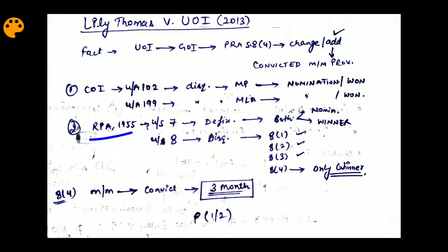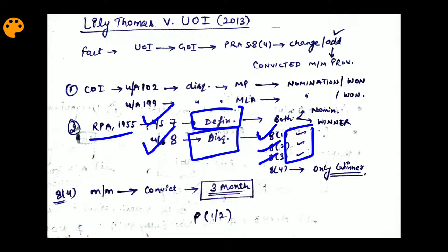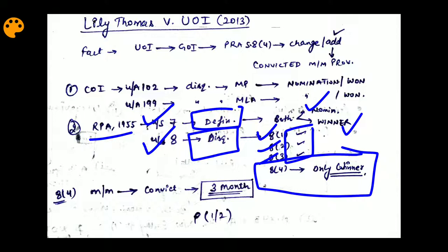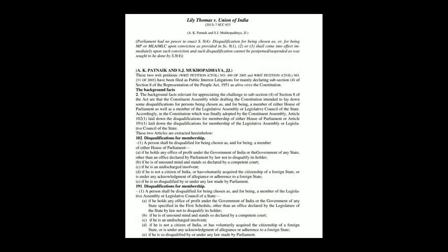Now let's look at the Representation of People Act 1951, Sections 7 and 8. Section 8 deals with disqualification. Section 8(4) introduces a discrimination. Under sub-clauses 1, 2, and 3, the provisions apply normally, but Section 8(4) is different — it creates a special distinction that we will examine.